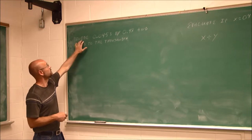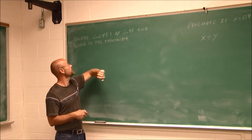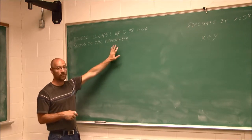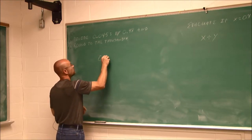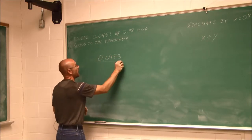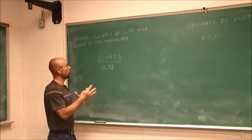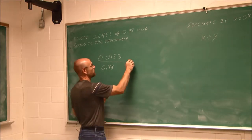If we look at this, it says divide 0.0453 by 0.98 and round to the nearest thousandth. So we have to know our place values. I'm going to divide this value by this value. So I know I'm going to have to move some decimals here, and we're going to use long division.